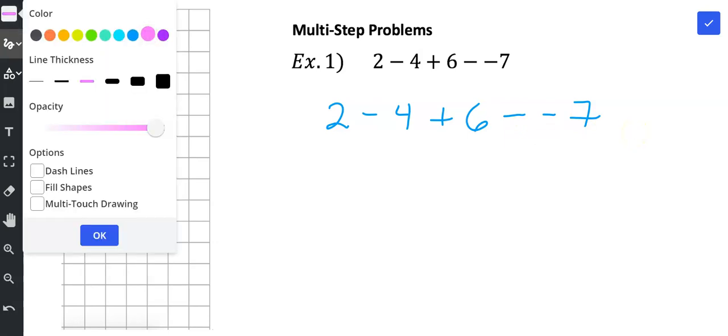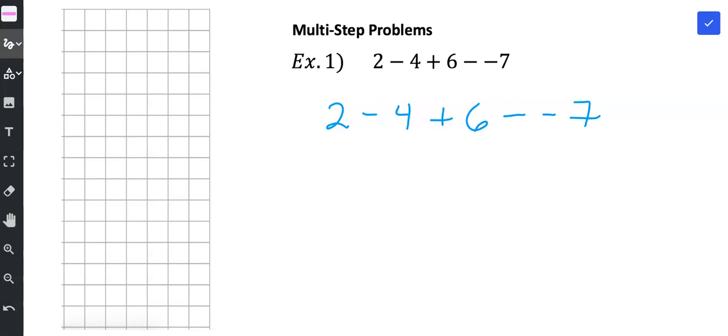I'm going to grab a different color and I'm going to go ahead and change 2 minus 4 to an addition problem. So I keep the minuend, the 2. Leave that alone. Then I'm going to make two changes. I'm going to change the subtraction to addition and then I'm going to write the opposite of positive 4, which is a negative 4.